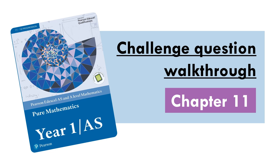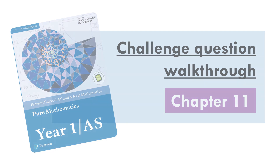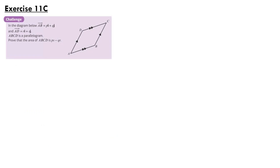Hello everyone, this is the challenge question walkthrough for Edexcel's Pure Year 1 textbook, Chapter 11. For our first question from exercise 11c, in the diagram below, the vector ab is equal to pi plus qj, and ad is equal to ri plus sj. We're told that abcd is a parallelogram — prove the area of abcd is ps minus qr.